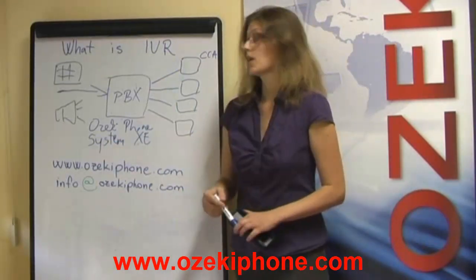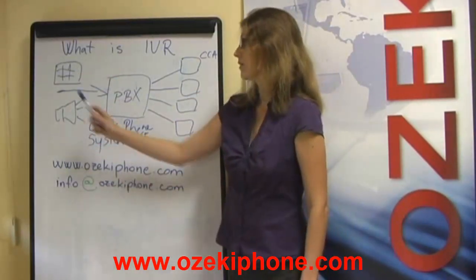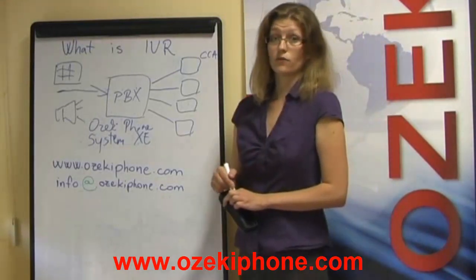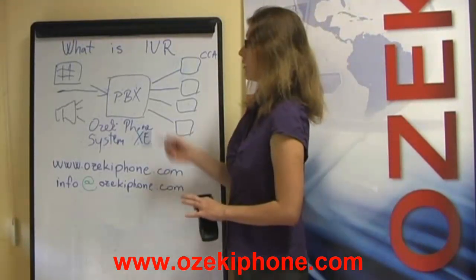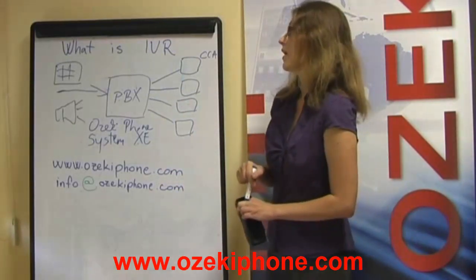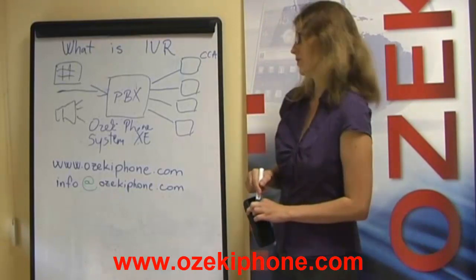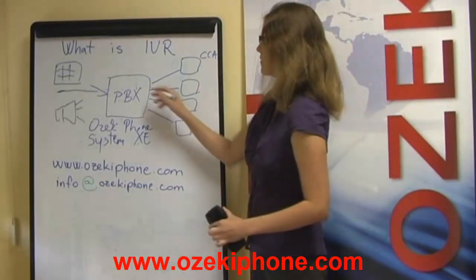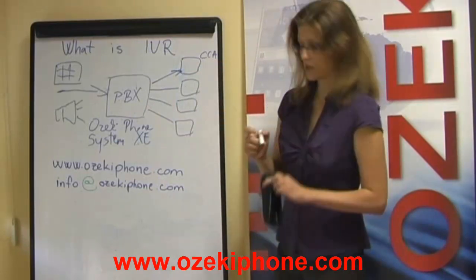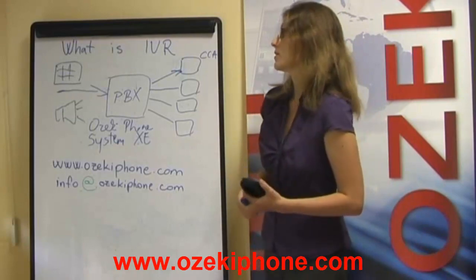The caller can navigate the IVR system with the numeric keypad of the telephone or with their voice, trying to find the answer to their questions. If the IVR doesn't contain the answer for the caller's exact question, the PBX redirects the call to one of the call center agents who can answer.